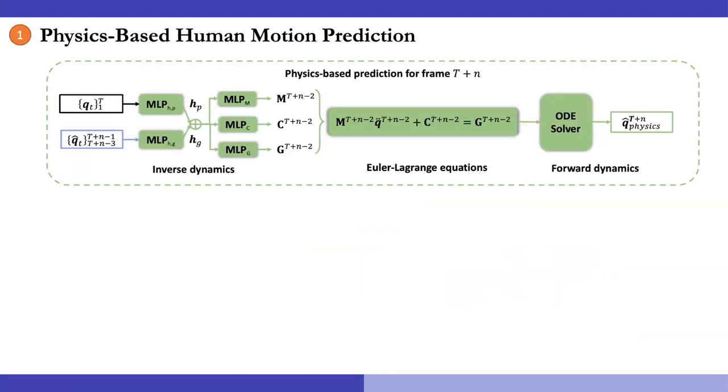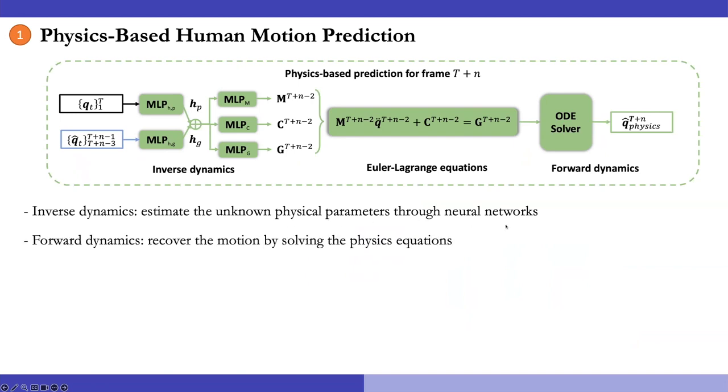Specifically, for the physics-based prediction model, it first performs inverse dynamics by estimating the unknown physical parameters through neural networks. Then, it performs forward dynamics to recover the motion by solving the fully specified Euler-Lagrange equations. Specifically, we first compute the acceleration and then compute the position using Euler's method.